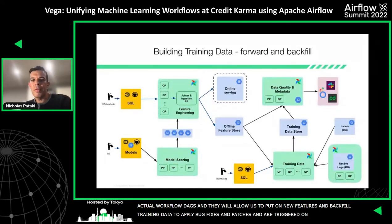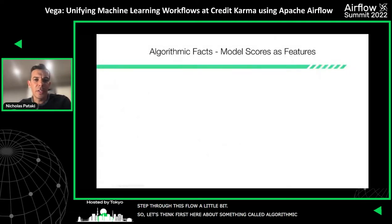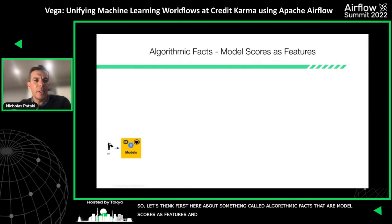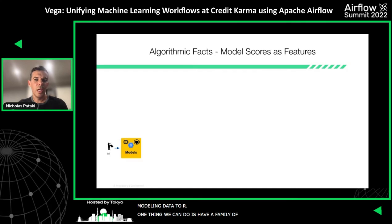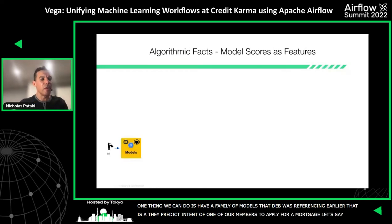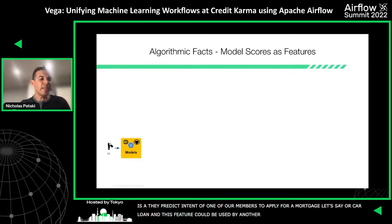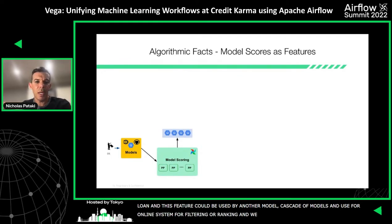Let's think about something called algorithmic facts — these are model scores as features. The point is to build up the feature store and then build up a modeling data store. We could have a family of models, as Deb referenced earlier, that predict the intent of one of our members to apply for a mortgage or a car loan. This feature could actually be used by another model — a cascaded set of models — or even used in the online system for filtering and ranking. We use Pipeline Processors to define a scoring ETL.